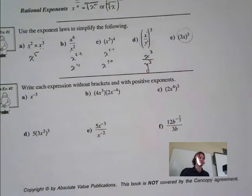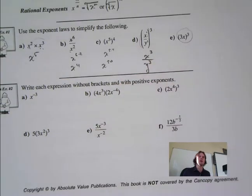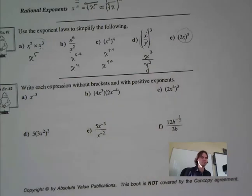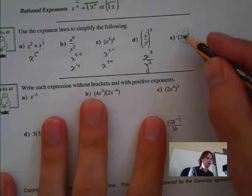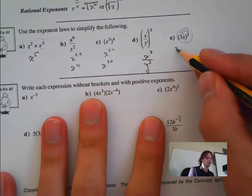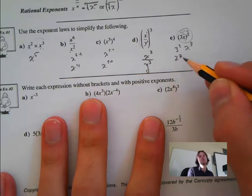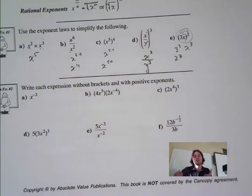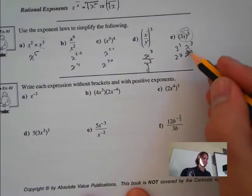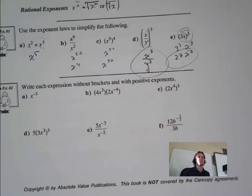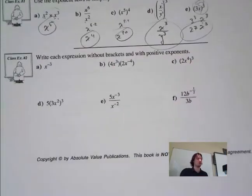This next one has a bracket around both the 3 and the x, so it's power of a product. The exponent must go to both the x and the 3. So we have 3 to the 3 multiplied by x to the 3, which is 27x to the 3, since 3 cubed equals 27.